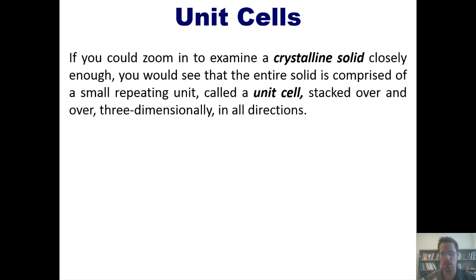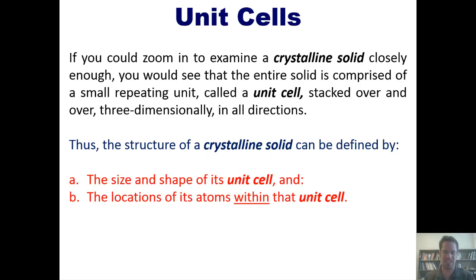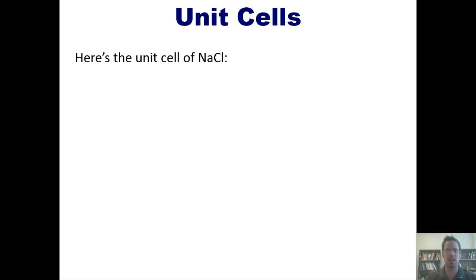If you could zoom in to examine a crystalline solid closely enough, you would actually see that the entire solid is comprised of a small repeating unit called a unit cell, stacked over and over three-dimensionally in all directions. Thus, the structure of a crystalline solid can be defined by the size and shape of its unit cell, and the locations of its atoms within that unit cell.